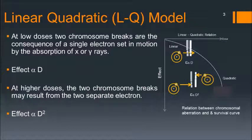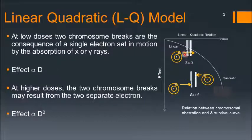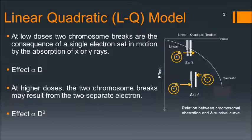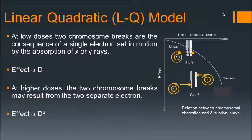To further explain the linear quadratic model, consider this graph. At low doses, two chromosome breaks are the consequence of a single electron set in motion by the absorption of x-rays — this is the linear portion, where the effect is proportional to dose. At higher doses, two chromosome breaks may result from two separate electrons, which is the quadratic portion where the effect is proportional to the square of the dose.